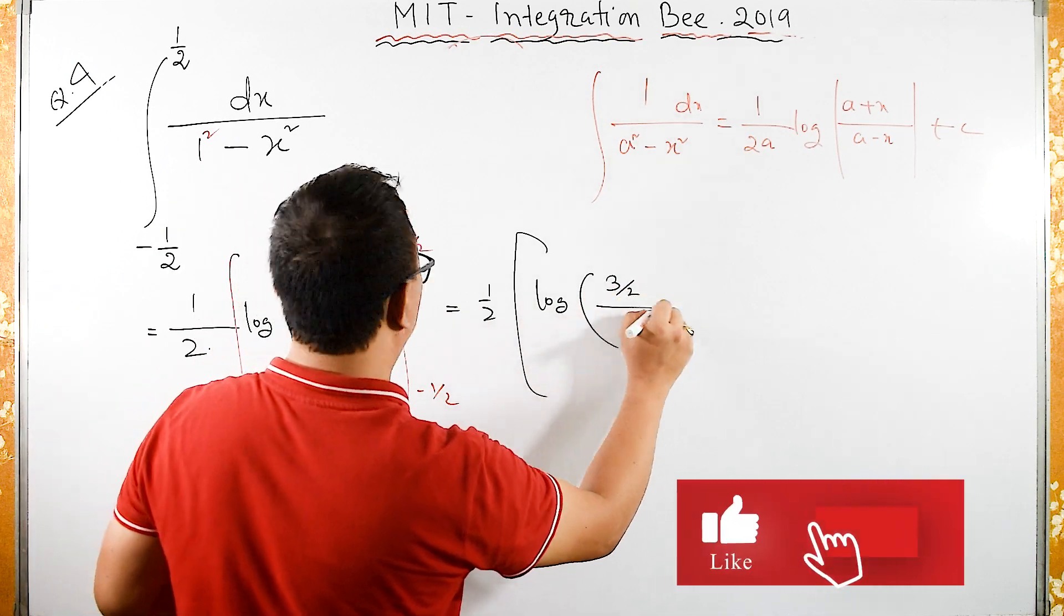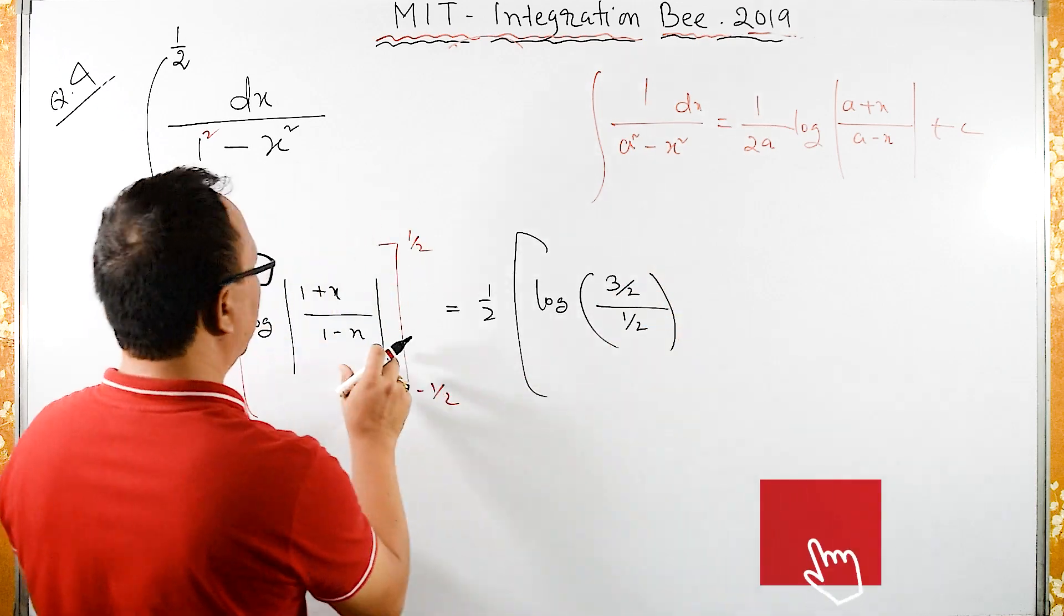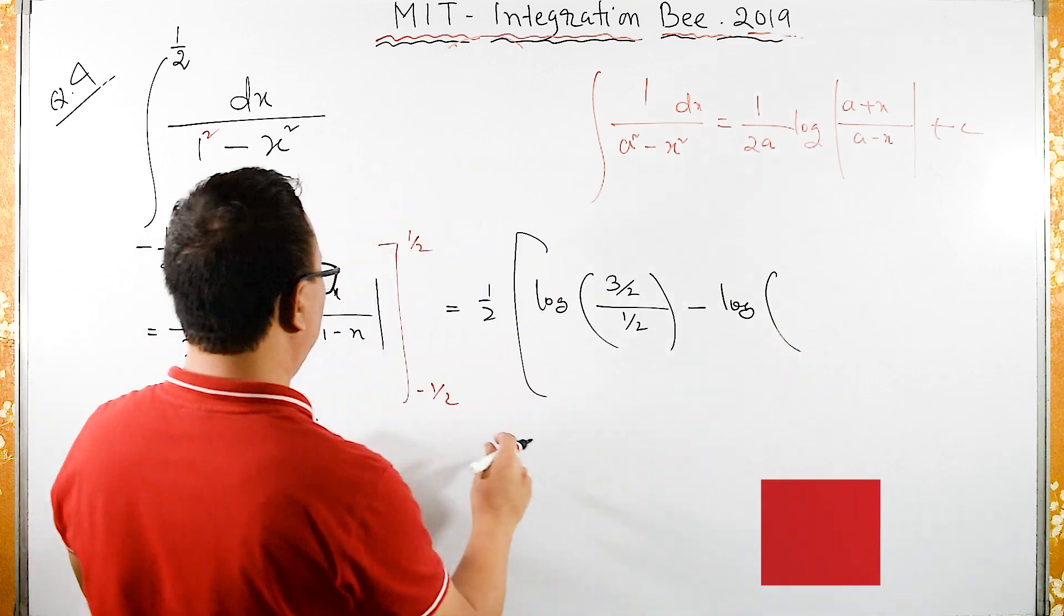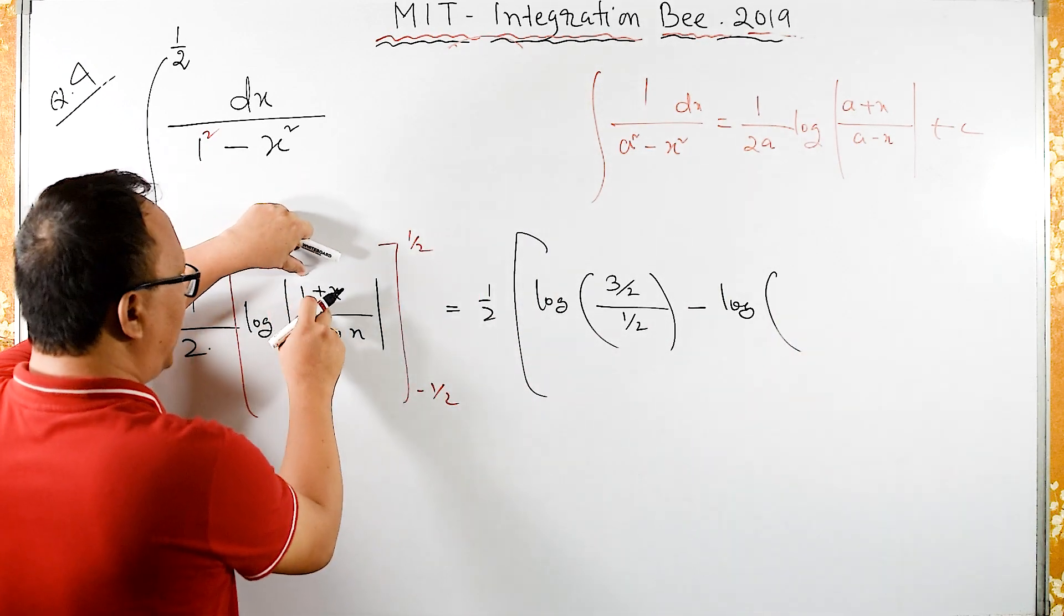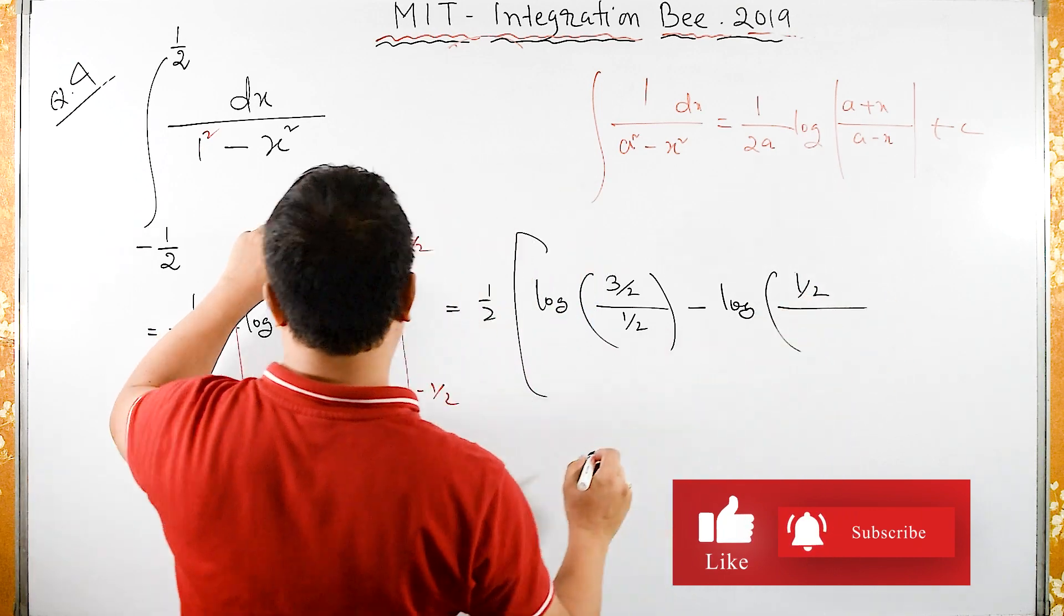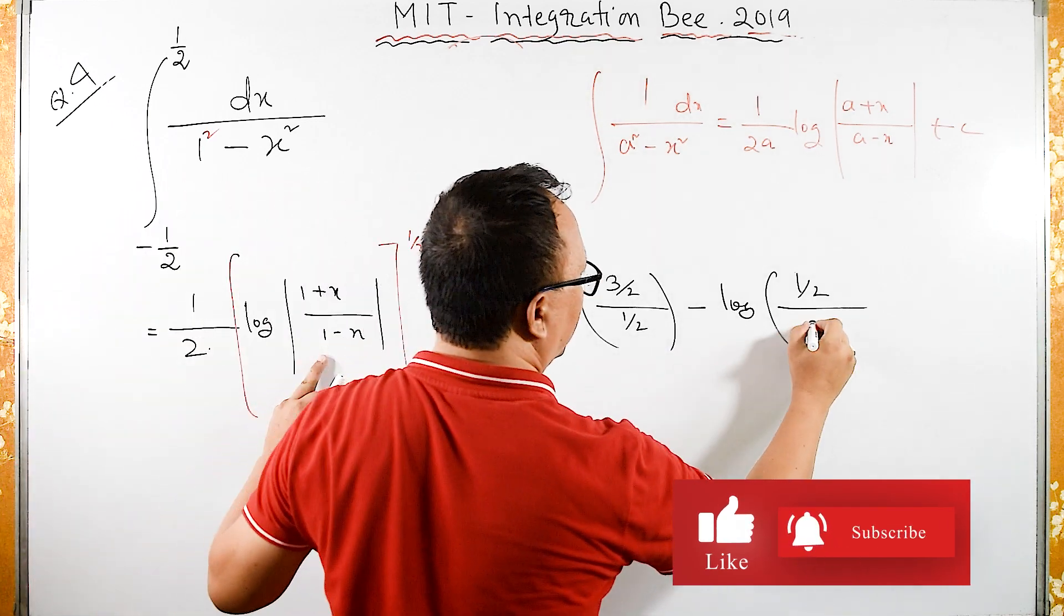3 by 2 upon 1 minus half is half. This is upper limit minus lower limit log of minus half. Here 1 minus half is half and then here 1 minus minus half, plus half, is 3 by 2.